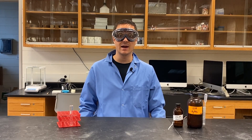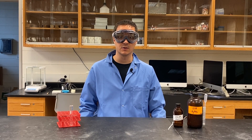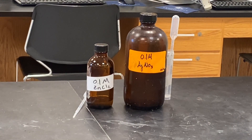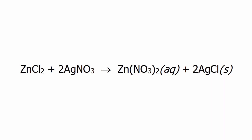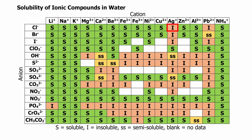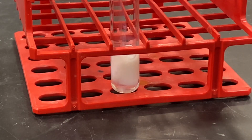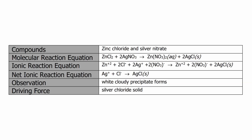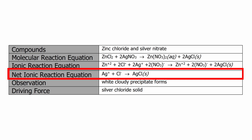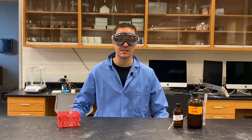In this experiment, you are asked to combine several pairs of chemicals and predict if a reaction will occur. I'll demonstrate with zinc chloride and silver nitrate. The molecular reaction equation for these compounds looks like this. By consulting my solubility table, I can see that silver chloride is insoluble. Mixing the two chemicals results in a cloudy white precipitate. In my notebook, I'll record a table including the ionic and net ionic reaction equations. The driving force here is the precipitation of silver chloride.